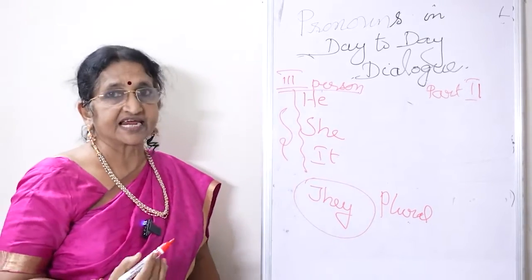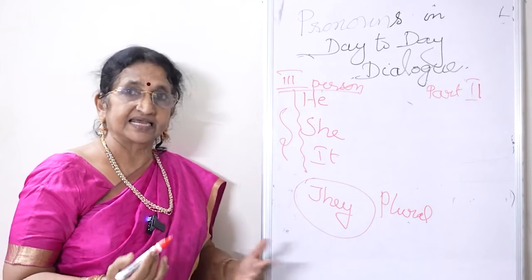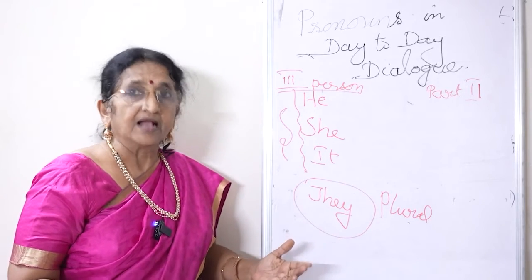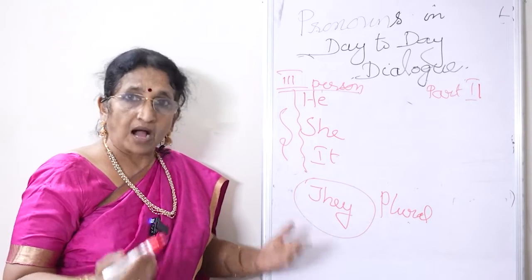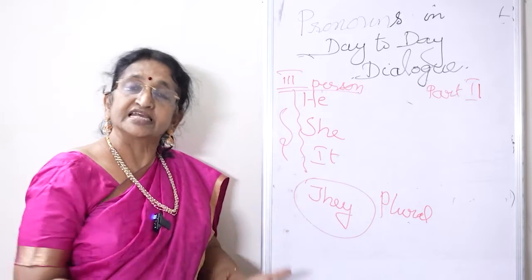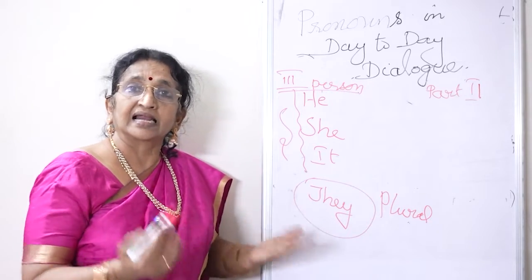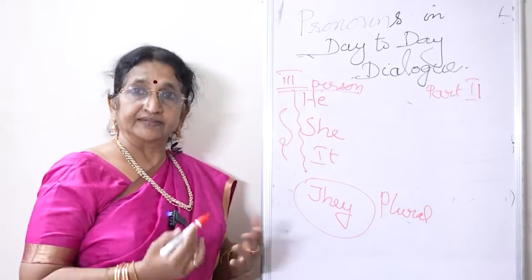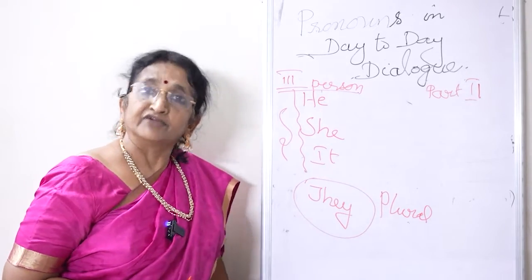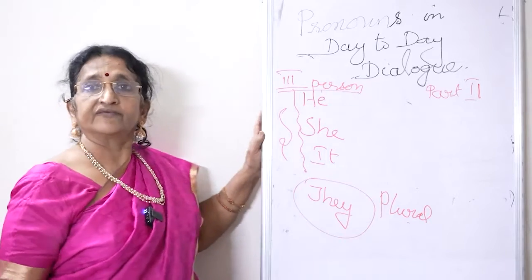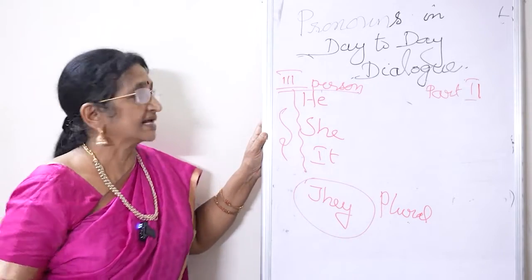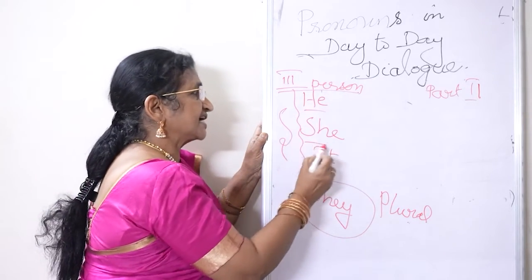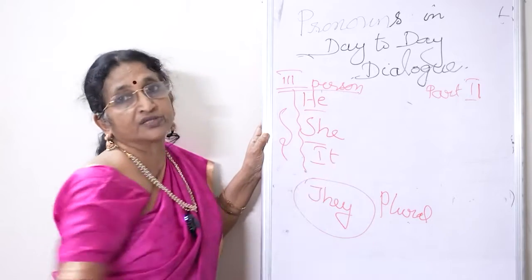He, she, it — he can be anybody: Bala, Ramu, Sheila, Mala, Kala, Lakshmi, Judith, Vinod — anything. He or she is used according to the gender. He is for masculine gender and she is for feminine gender.